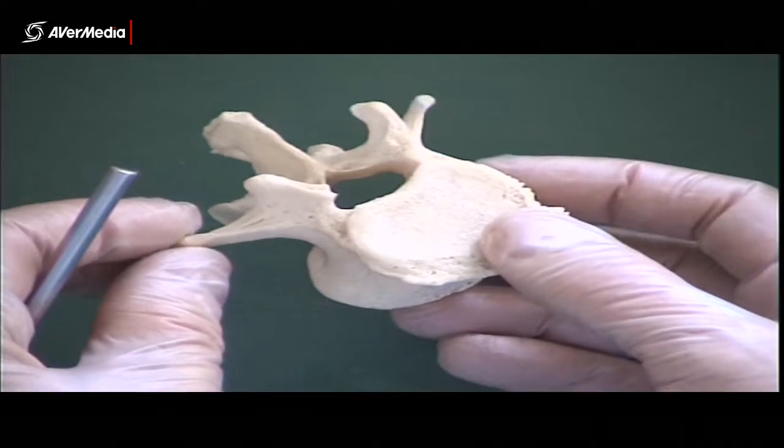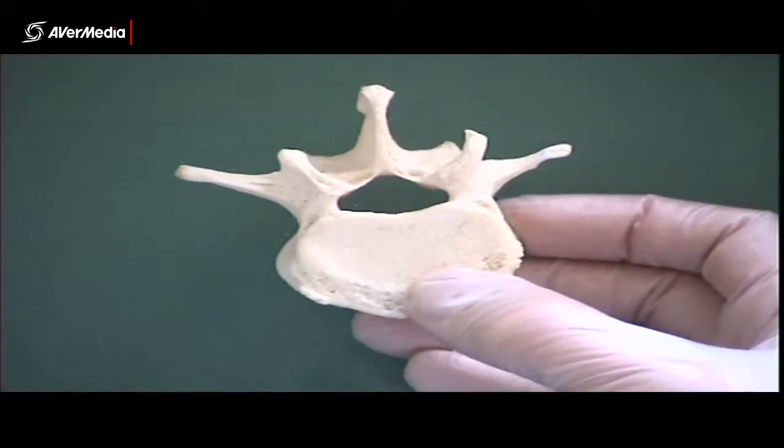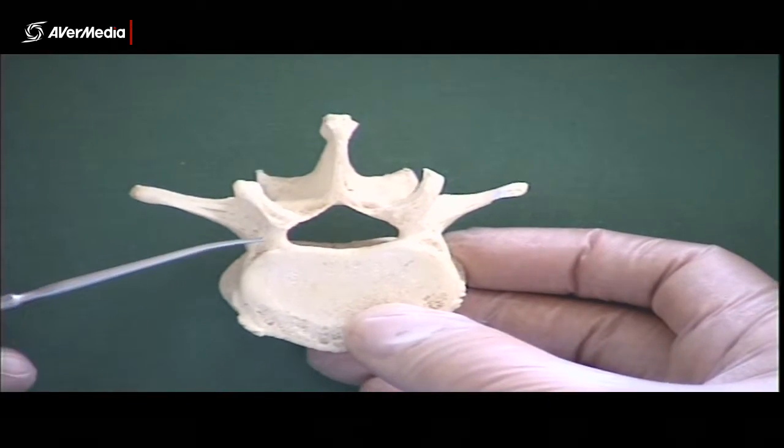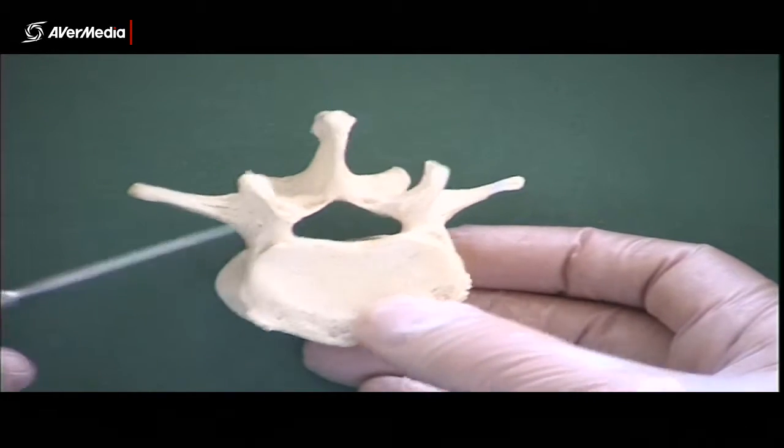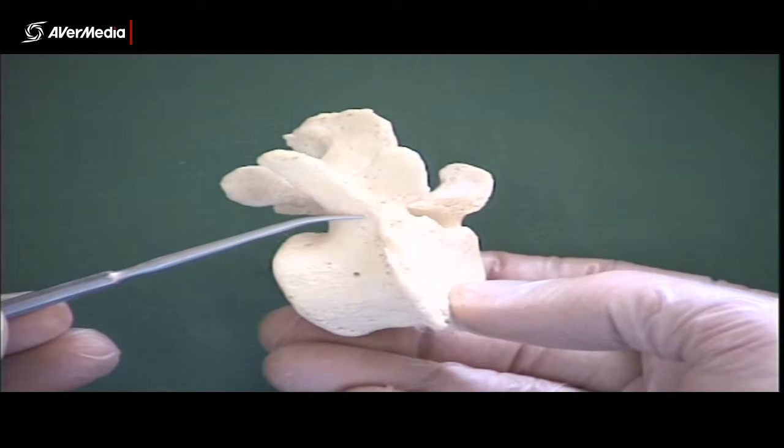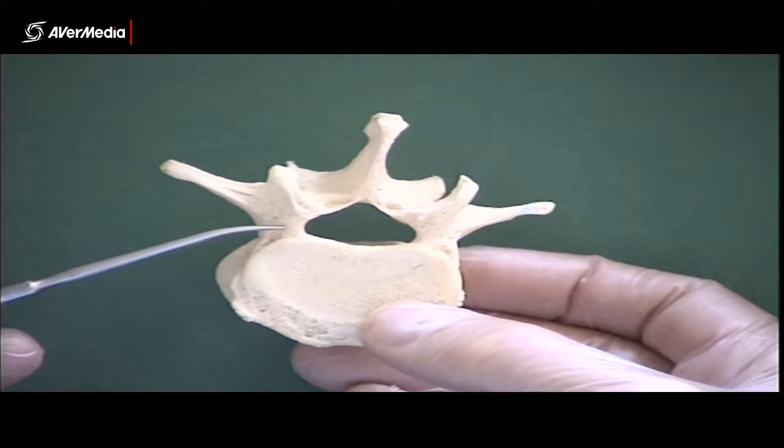Now the arch is made up of several different bits. So seen from above, firstly, attaching the arch to the body, we have the pedicle. So there's the pedicle, seen from the side as well, pedicle there.